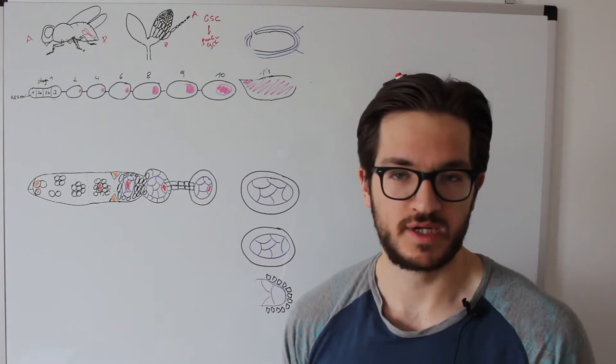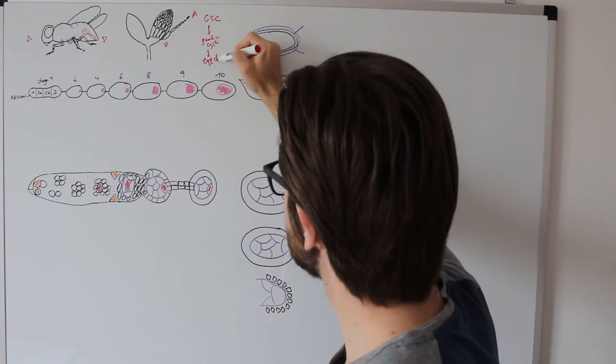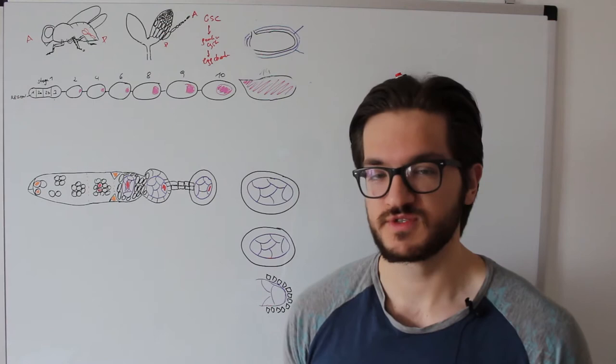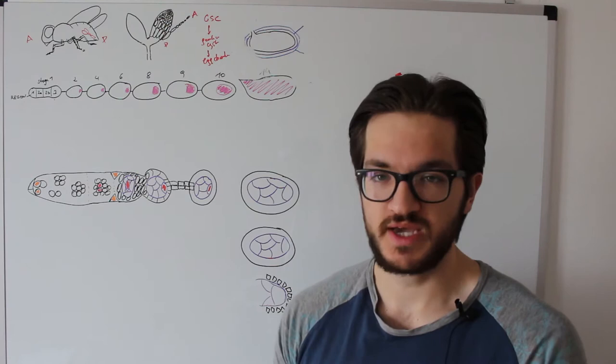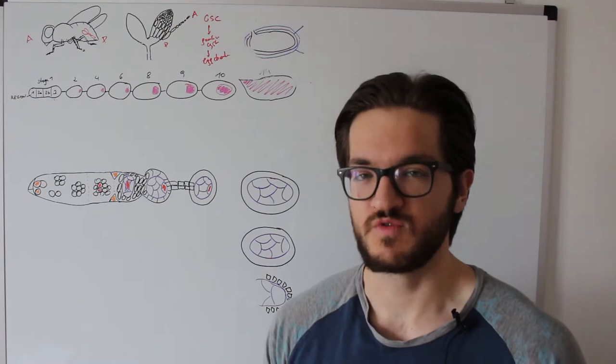One cell of this germline cyst will be the oocyte. Later this germline cyst will be encapsulated by other cells, somatic cells, and we then refer to this whole aggregate of cells as egg chamber. The egg chamber is the entity that develops throughout the ovariole, and its basic function is to produce a big cell, a giant oocyte, with all the nutrients, different membranes, and also the anterior-posterior axis as well as the dorsal-ventral axis already defined.